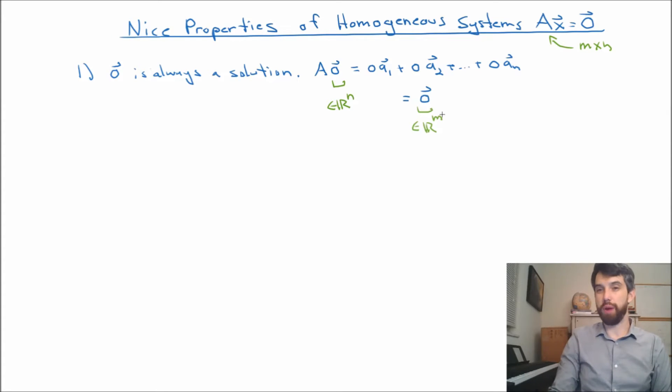Now, this is an algebraic property. We haven't seen any geometry, we haven't seen any specific example, just follows by our definition of matrix vector product. But it's worth noting here that we saw this geometrically in the previous video. That was to say that homogeneous systems, they went through the origin. That is to say that the zero vector was always a solution to a homogeneous system, so we should expect this result.